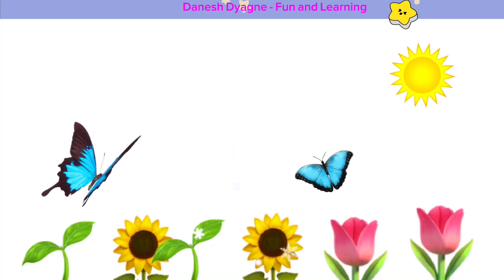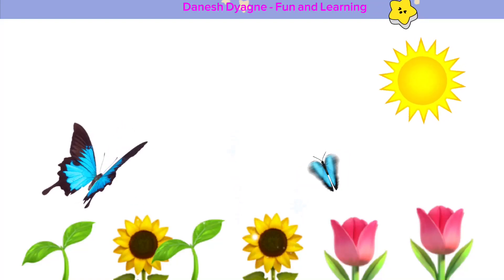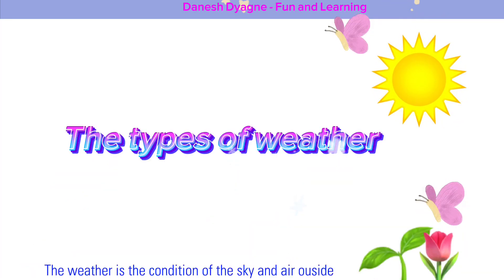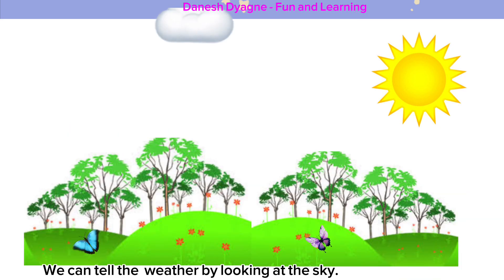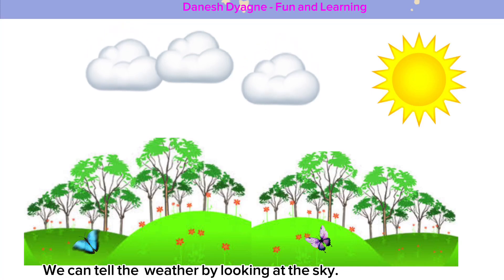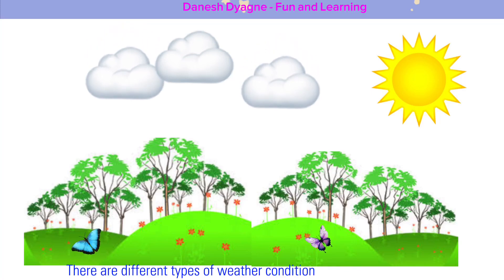Hello kids! For today's video, we're going to learn the types of weather. The weather is the condition of the sky and air outside. We can tell the weather by looking at the sky. There are different types of weather conditions.